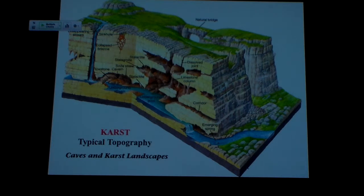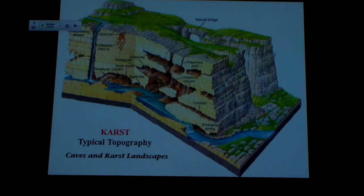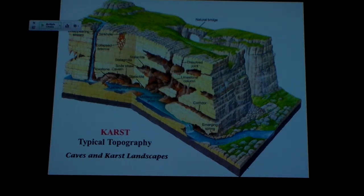Fractures dissolve out, caves form, and underground river systems take advantage of these dissolved pathways. Karst is actually a Polish term — a lot of this type of topography occurs over in Poland, Romania, the Balkan area. It's very typically developed over there, and that's where a lot of the early science of studying these landscape systems developed.